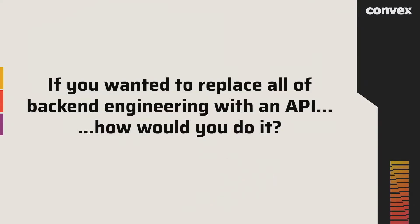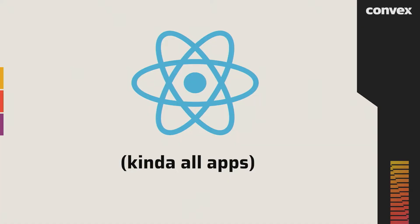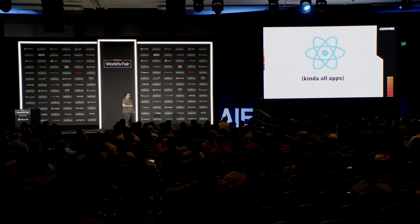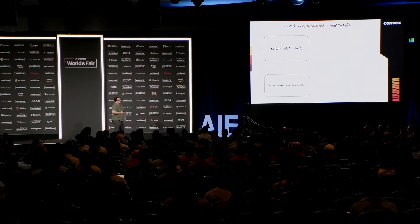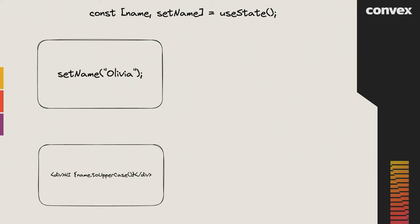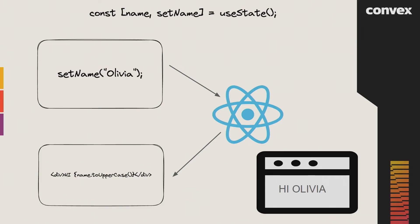If you were doing this in the 2020s as a design exercise, what would that API look like? We took heavy inspiration from React, and more generally, the way all applications are starting to have this functional reactive data flow relationship to state. In React, you create a state variable with a setter, and whenever that state changes, all the places that depend on it are updated, re-rendered, refreshed. So in this case, our app would show 'Hi Olivia' in all caps.